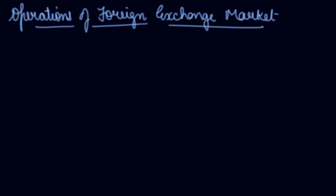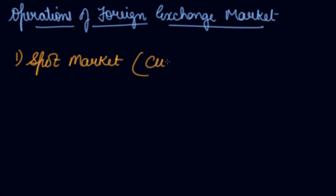In this video we will be studying about the operations of the foreign exchange market. The operations are conducted in two ways: number one is spot market operations, also called current market operations, and the second one is forward market operations. Now let's understand the spot market operation.